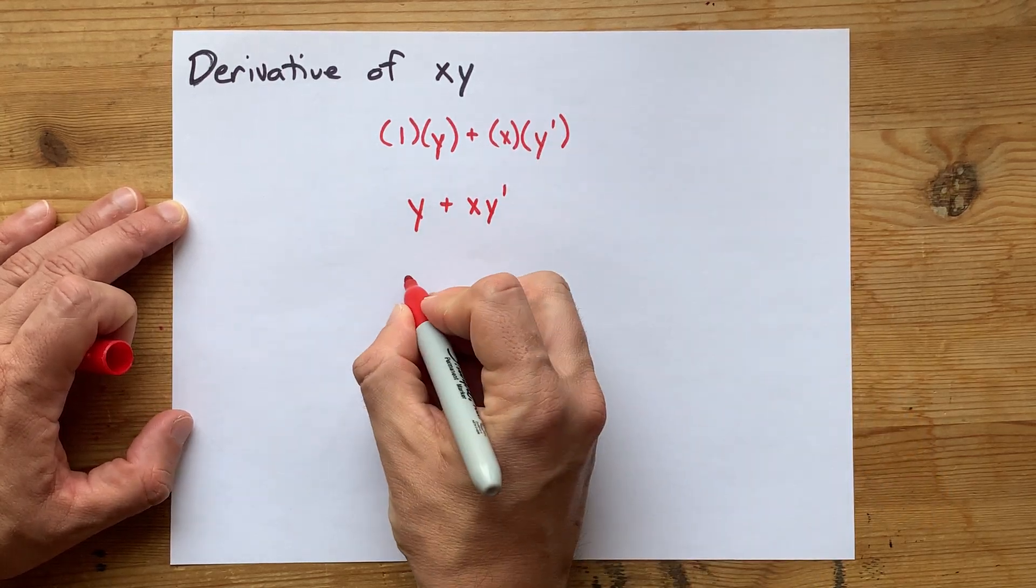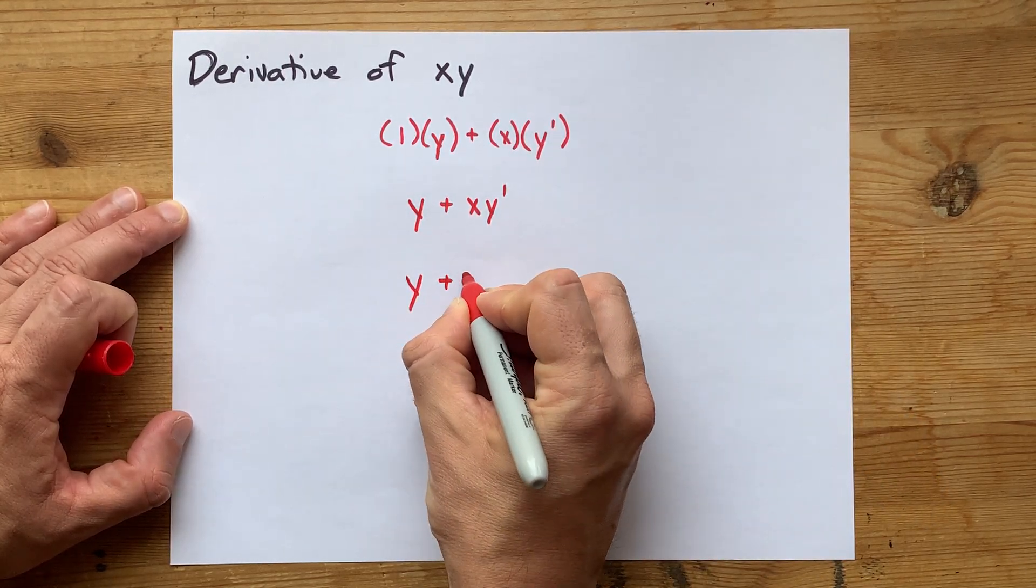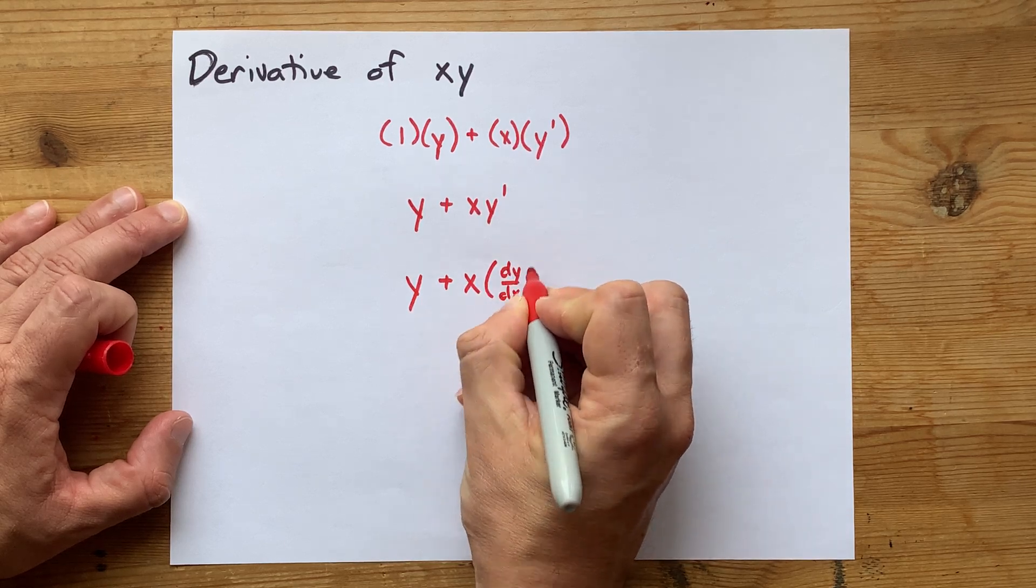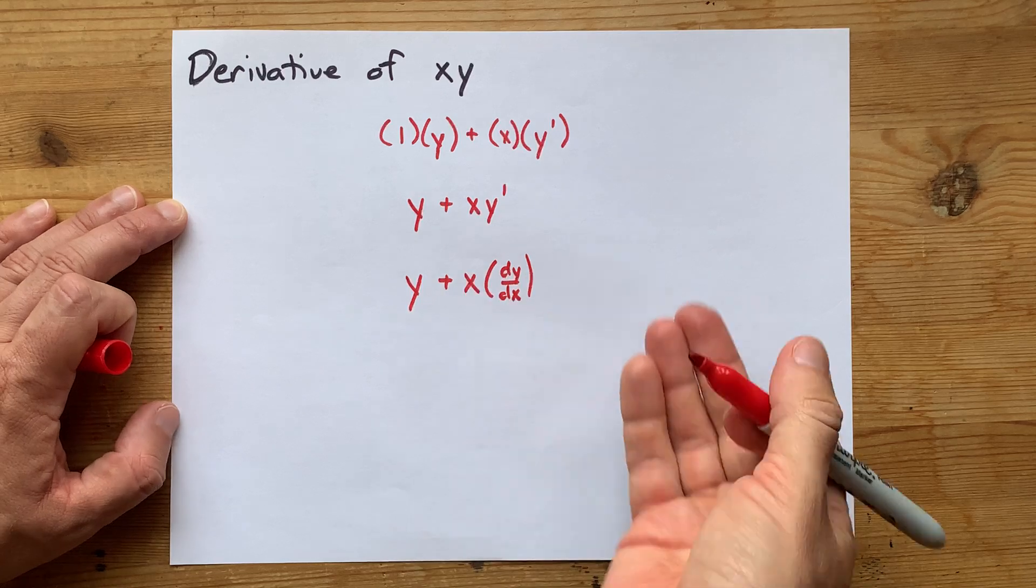Now, if your teacher doesn't like y prime, you're probably going to have to write y plus x times dy/dx. These are just different ways of writing the exact same thing.